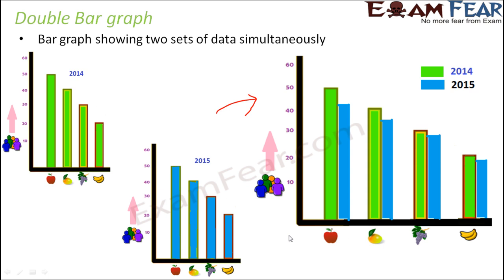In this bar graph, instead of one bar for every item you have two bars. The green bars represent 2014 and the blue bars represent 2015. You can see that in 2014 almost 50 students liked apple, and in 2015 around 42 students liked apple. So the liking for apple has reduced from 2014 to 2015. Looking at all the graphs, you can see that the liking of all the fruits has decreased from 2014 to 2015.